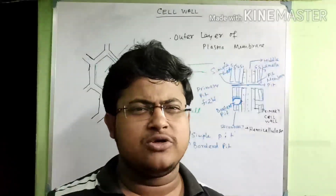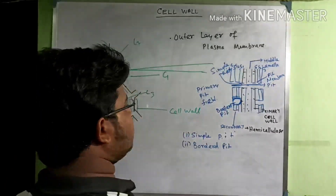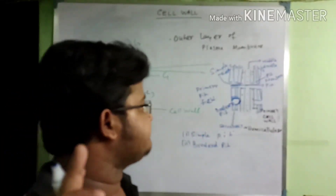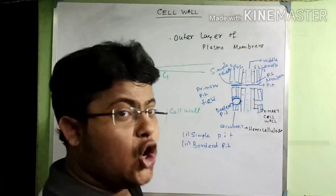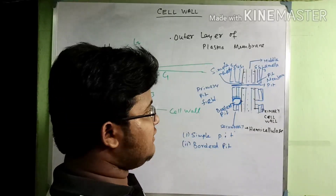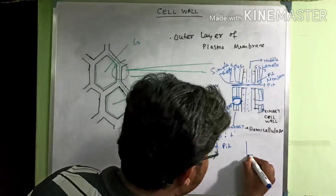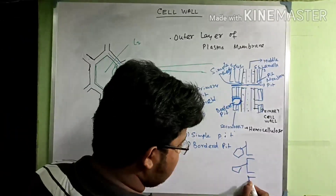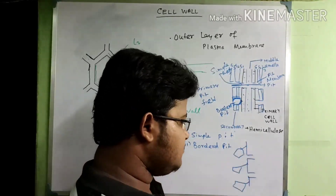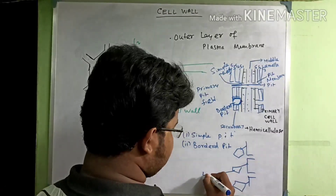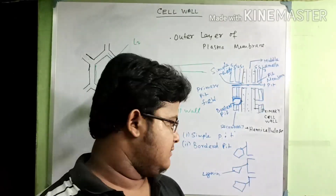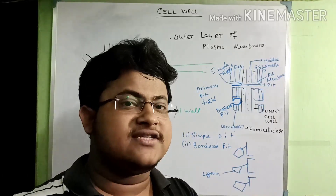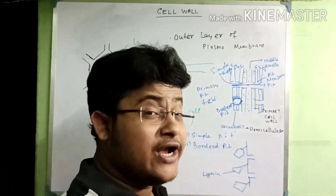In some woody plants there is also an extra covering of the cell after the secondary wall — an irregular deposition of lignin. When the secondary cell wall is deposited, it means the cell is dead and only provides mechanical support. This additional layer is known as the tertiary cell wall.